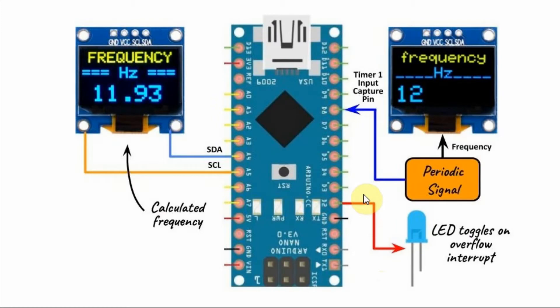A block diagram of the implemented system is shown here. The periodic signal is fed into pin D8, which is Timer 1's input capture pin, and the frequency of the input signal is also displayed on this OLED screen. Timer 1 is programmed to capture the periodic signal's rising edge pulses and use that information to calculate the frequency of the signal and display it on the OLED screen.